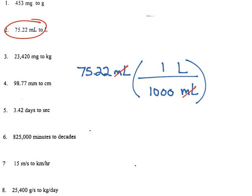So in my calculator, all I'm doing, or in my head, because we can do this in our heads as well, we're doing 75.22 divided by 1000 and we get 0.07522 liters. And this makes sense because it should be a smaller number because you can fit more milliliters than I can liters in this volume.